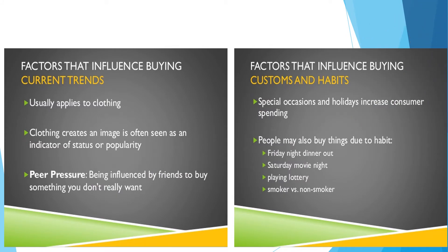Factors that influence buying — current trends. Current trends usually apply to clothing. Clothing creates an image and is often seen as an indicator of status or popularity. Peer pressure — being influenced by friends to buy something you don't really want — is part of current trends. Next, we have factors that influence buying in customs and habits.